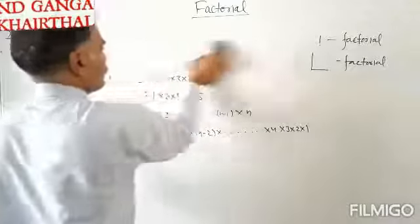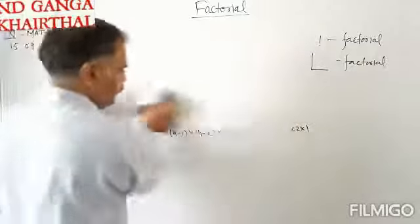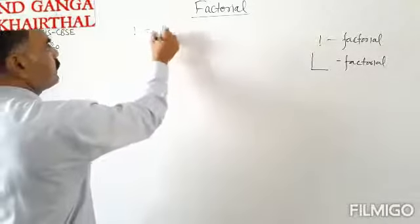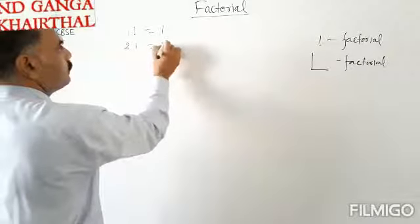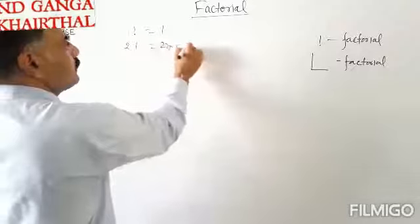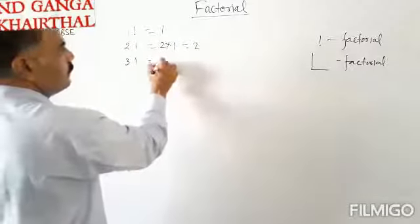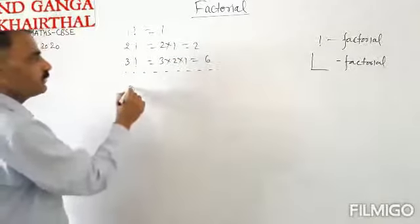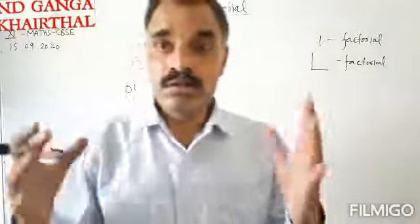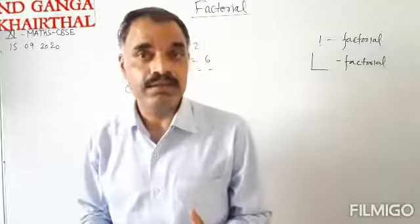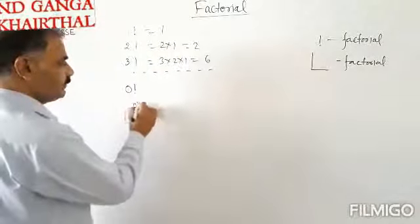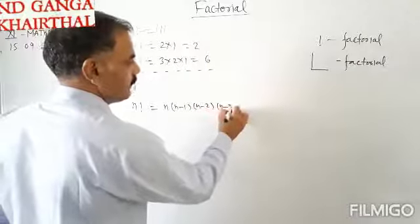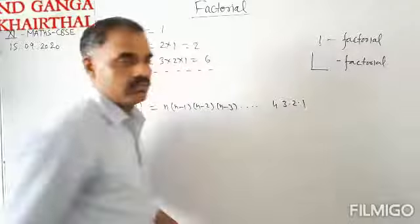What is the value of 0 factorial? The value of 0 factorial and other values can be found as: 1 factorial is equal to 1; 2 factorial is equal to 1 into 2, that is 2; factorial 3 is equal to 3 into 2 into 1, equals to 6. We can find these factorials. Now, what is the value of 0 factorial? Zero factorial can be found using the formula: n factorial equals n into n minus 1 into n minus 2 into n minus 3, and so on, into 4, 3, 2, 1.